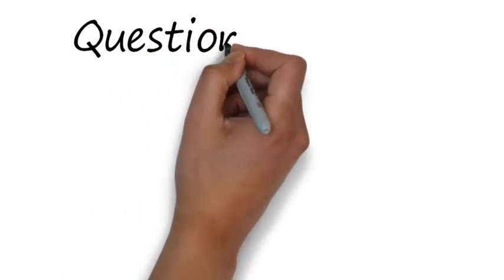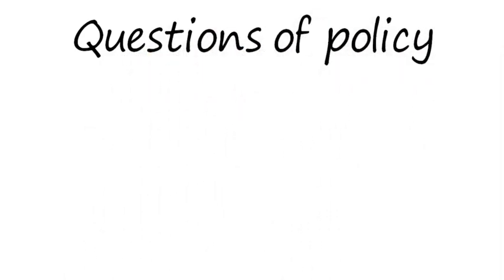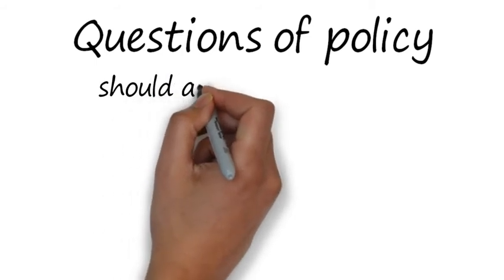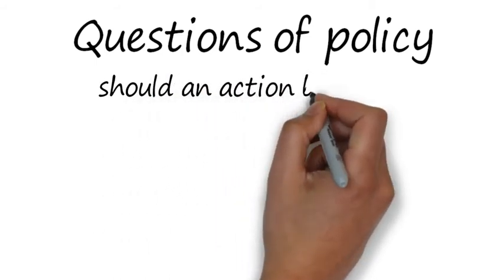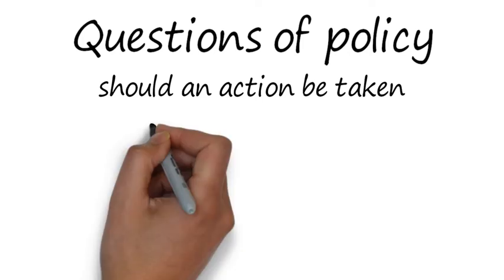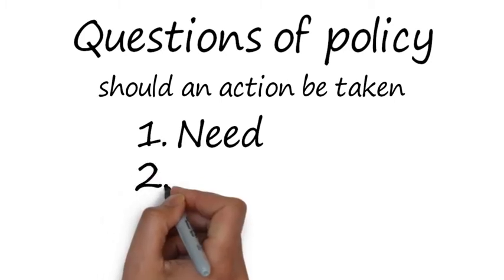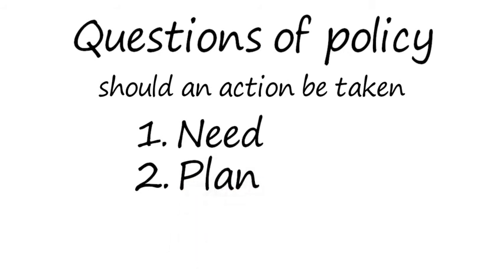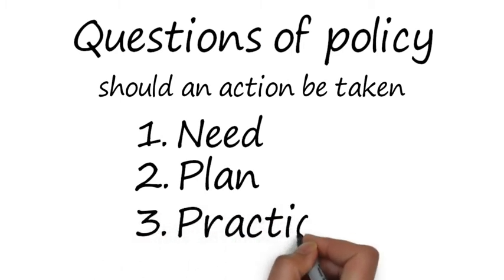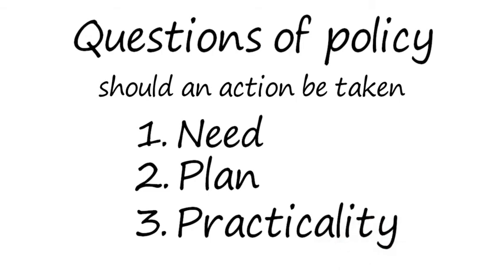Third are questions of policy — a question about whether a specific course of action should or should not be taken. Questions of policy must address three issues: first, need — is there a problem or need that requires change from current policy? Second, plan — once you have shown a problem exists, you must explain your plan for solving it. Third, practicality — ask whether or not the plan will actually solve the problem, and also whether it will create more issues and problems than it solves.